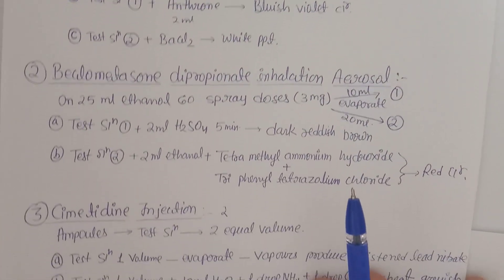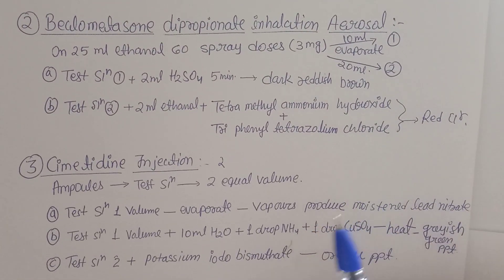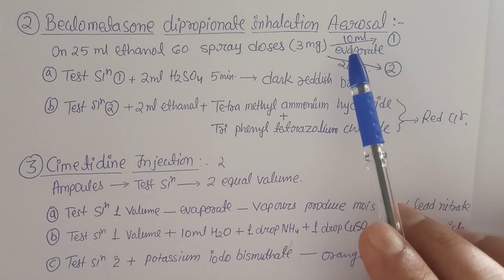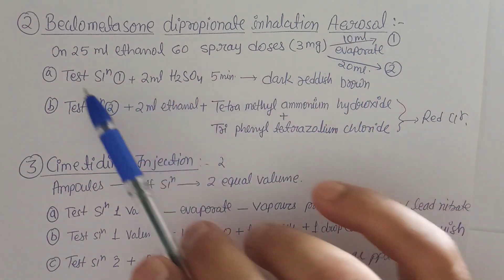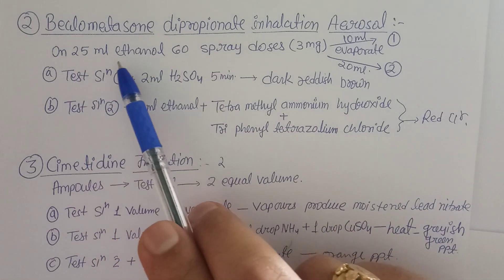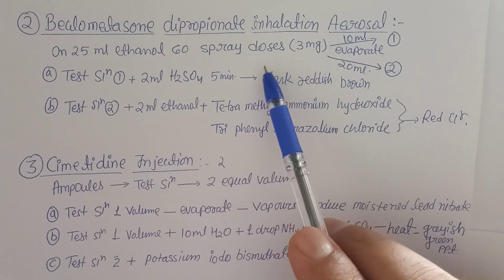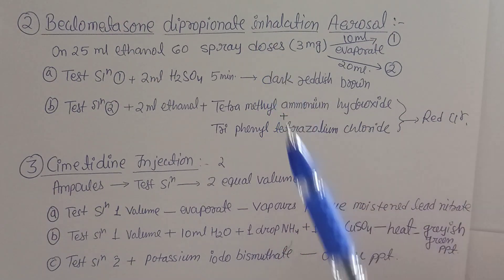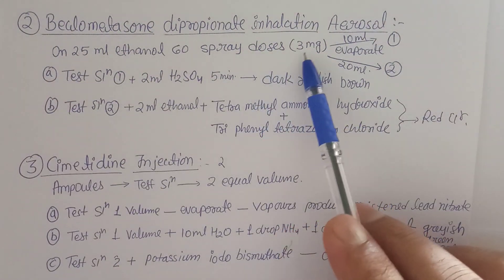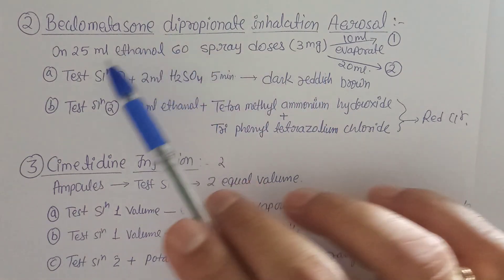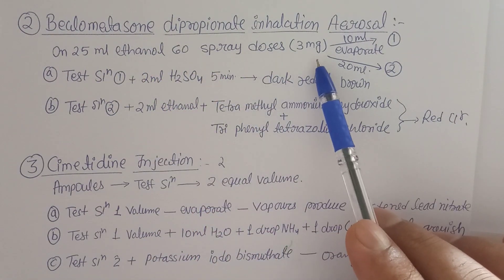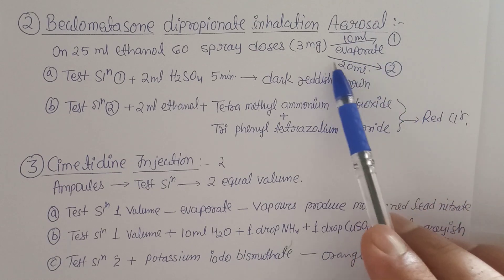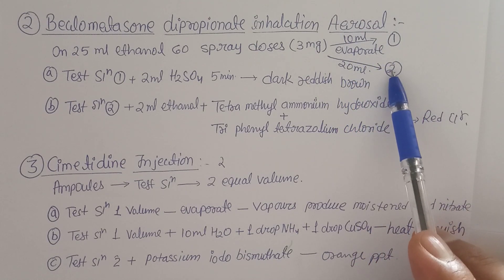The second important drug, starting from alphabet B, is beclomethasone dipropionate inhalation aerosol. For sample preparation: spray 60 doses into 25 ml of ethanol. The 60 sprays will dissolve 3 mg of beclomethasone into 25 ml ethanol. Evaporate 10 ml to get Test Sample 1, and evaporate 20 ml to get Test Sample 2.